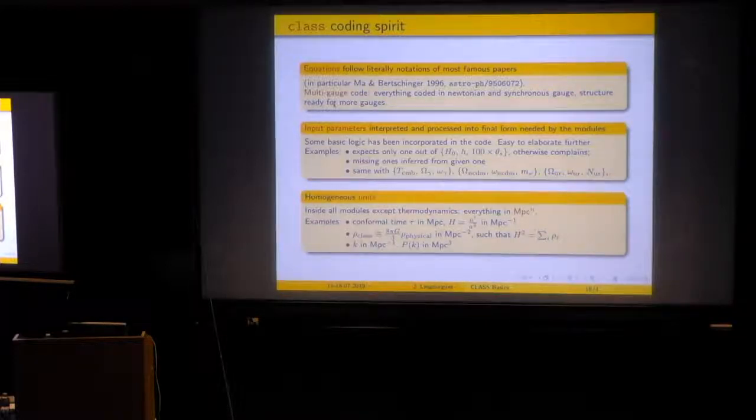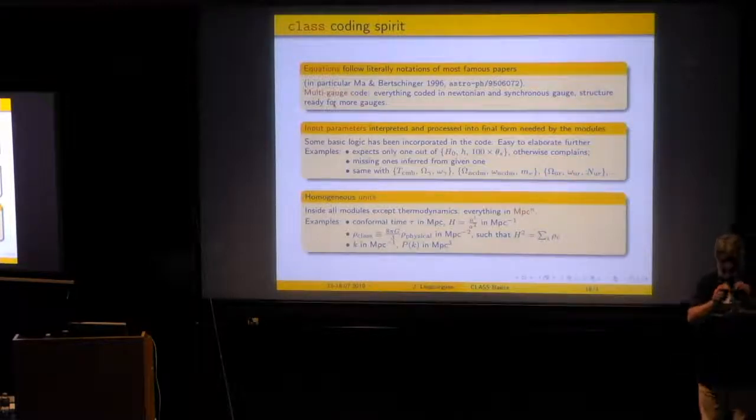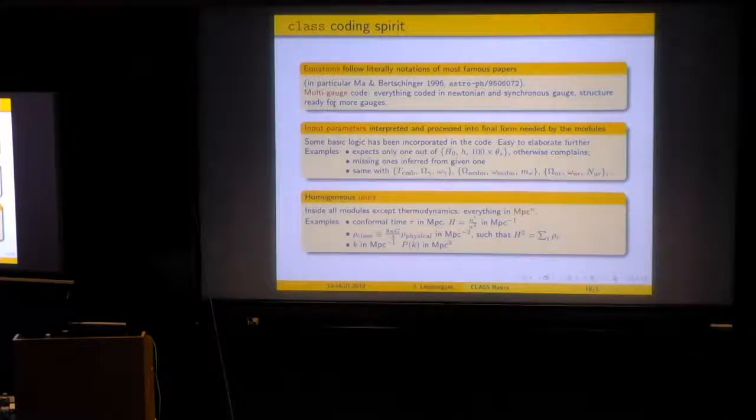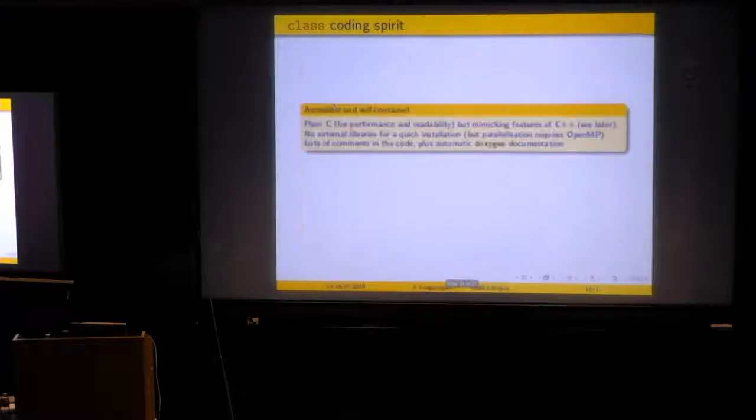But suppose that I take my physical density and I rescale it by 8 pi G over 3. Then this combination is a contribution to H squared through the Friedmann equation. And the Friedmann equation will use H in megaparsec minus 1. So this combination will be megaparsec minus 2. So every time you will find a background density in CLASS, it will stand for this particular combination. And it will be in units of megaparsec to the minus 2. And then with these conventions, the Friedmann equation is just H squared equals the sum of these densities. The wavenumber is, of course, inverse megaparsec. Of course, when you do a plot at the end, very often you want h by megaparsec. Then it's your task to redefine it.